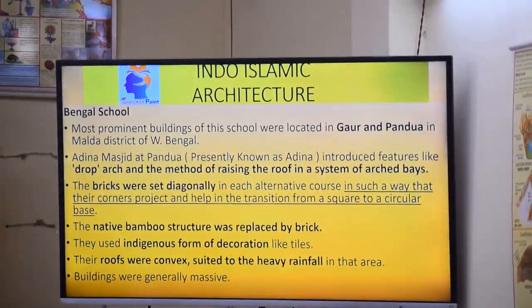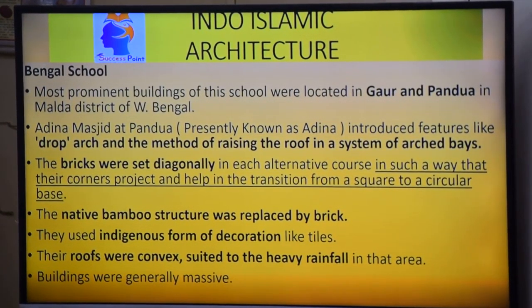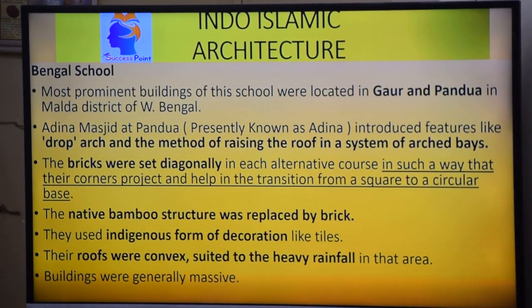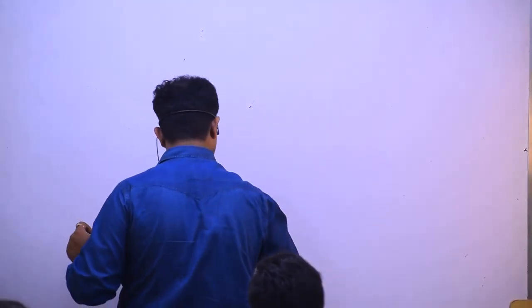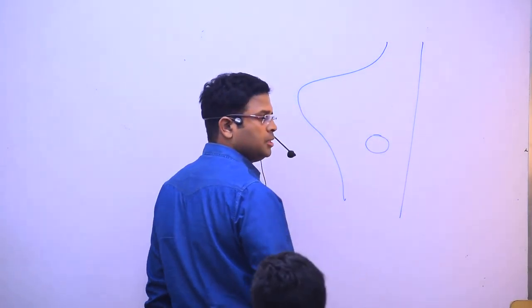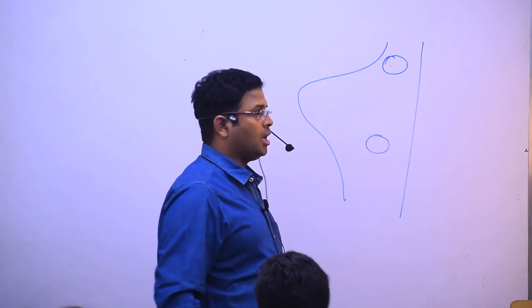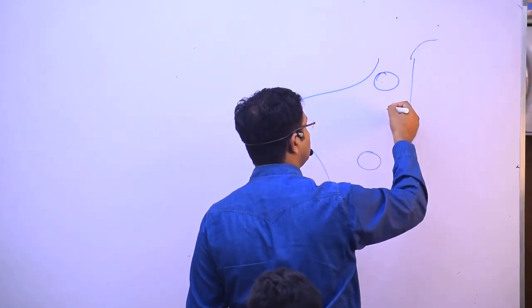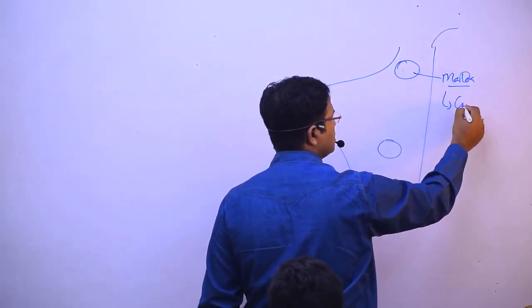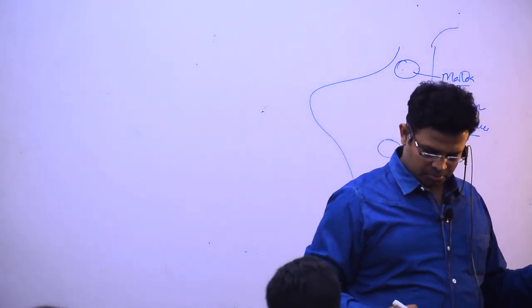Now I said that the most important buildings of this school were, first we are going to see which school? Bengal. For Indo-Islamic architecture, and I said buildings of this school are located in Gaur and Pandua in the Malda district.